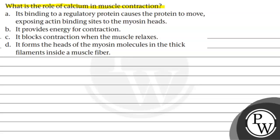A. It's binding to a regulatory protein causes the protein to move, exposing actin binding sites to the myosin heads. B. It provides energy for contraction. C. It blocks contraction when the muscle relaxes. Or D. It forms the head of the myosin molecules, the thick filament inside the muscle fiber.